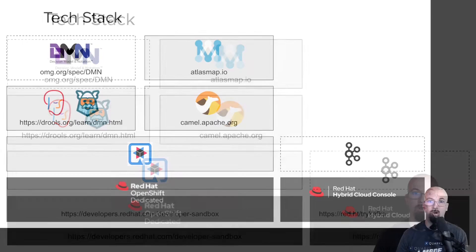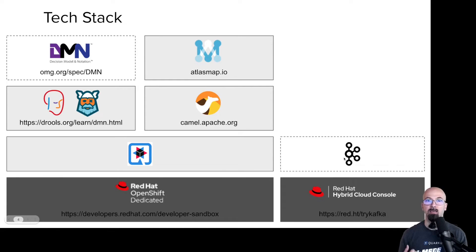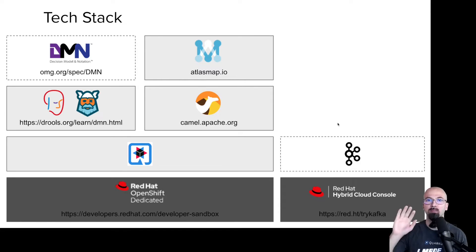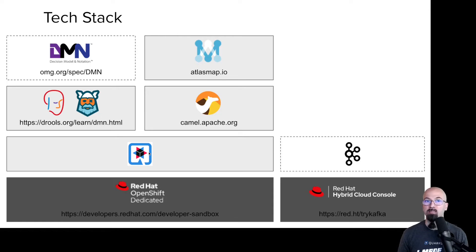Let's speak about the technological stack. On the right-hand side we have Apache Kafka as our message broker, and we will use it on top of the managed application service offering from Red Hat. One great aspect of this demo is that you can start using this service free of charge with a trial. The code will be linked below. The application itself is based on Quarkus, deployed on the Red Hat developer OpenShift sandbox — also free to try. We have been using rules and specifically DMN for the decision table.